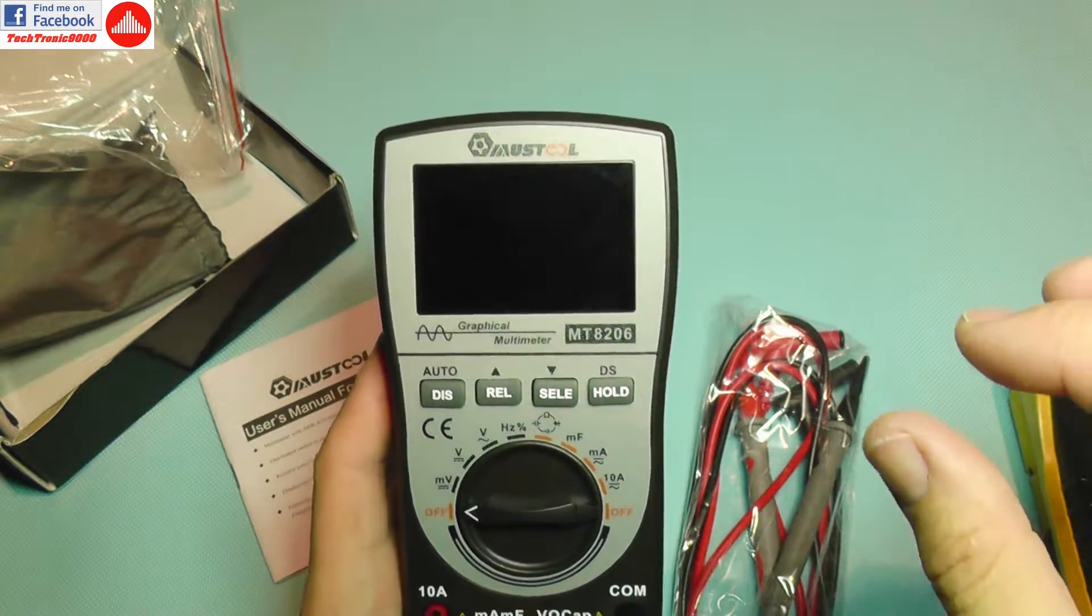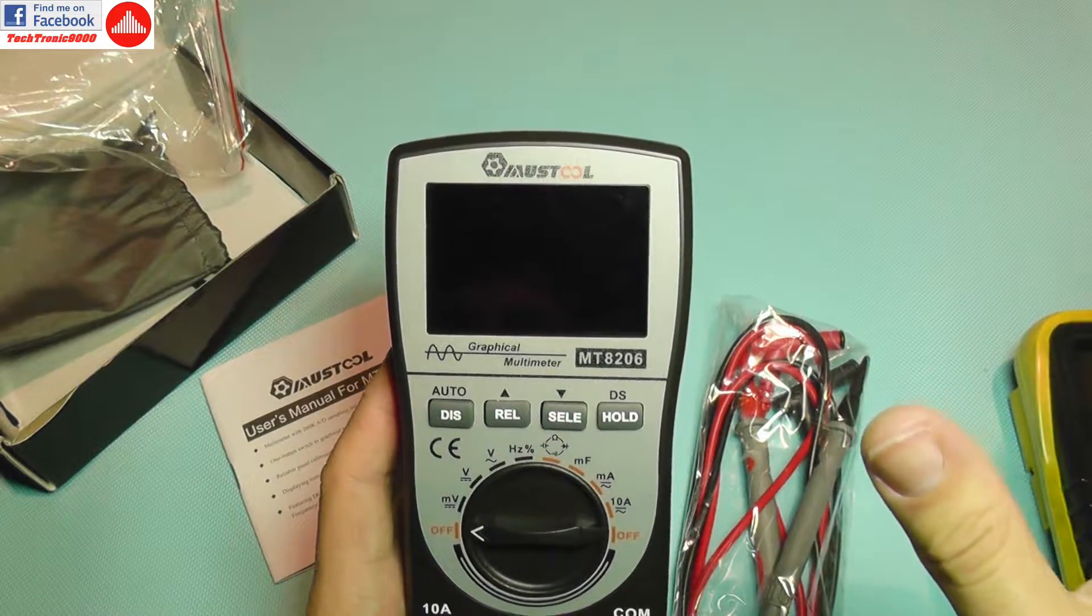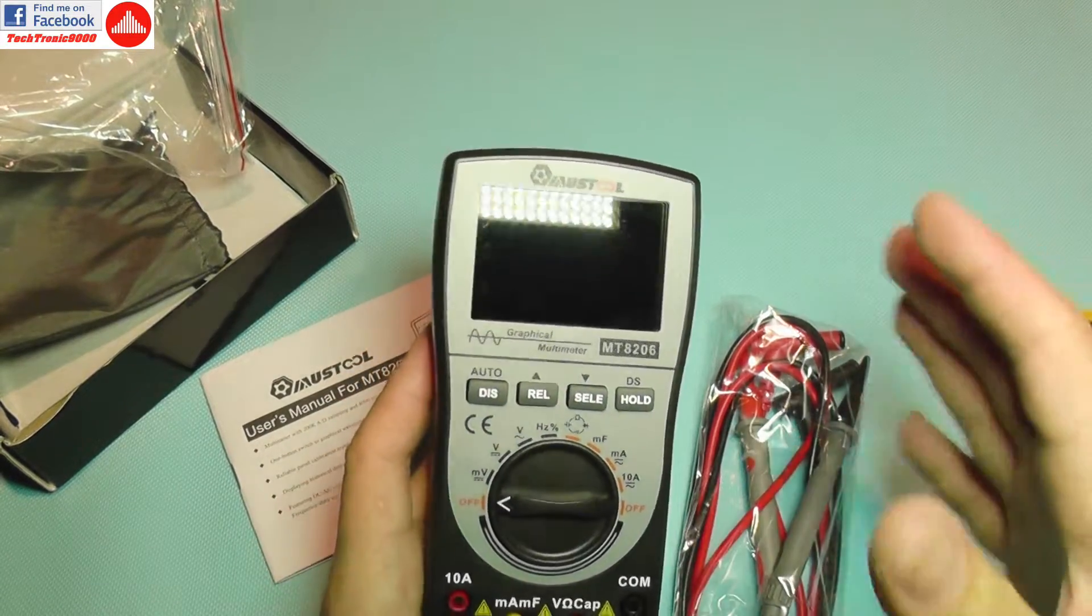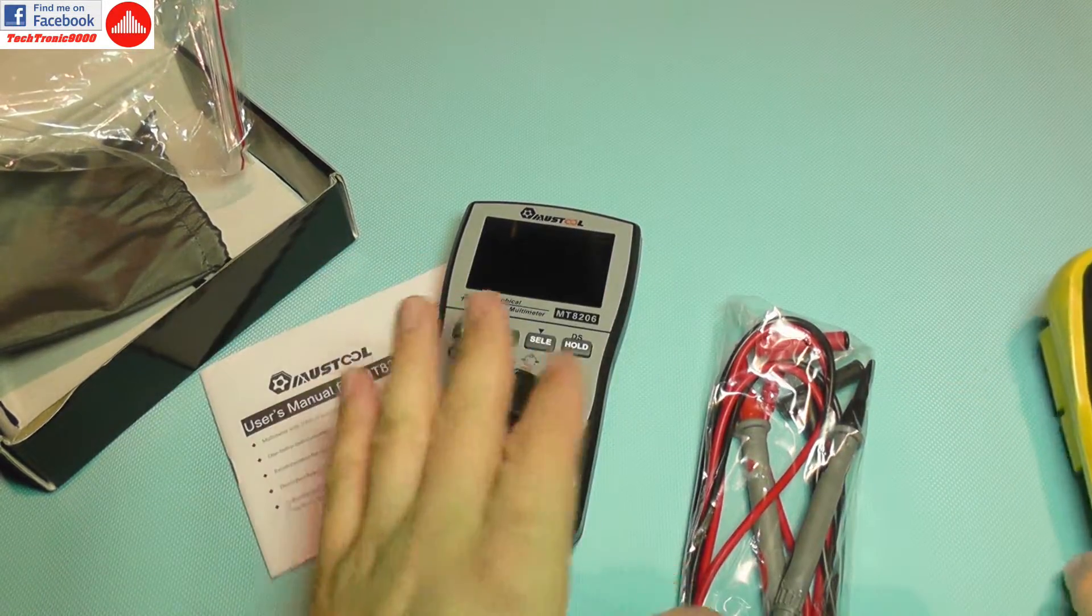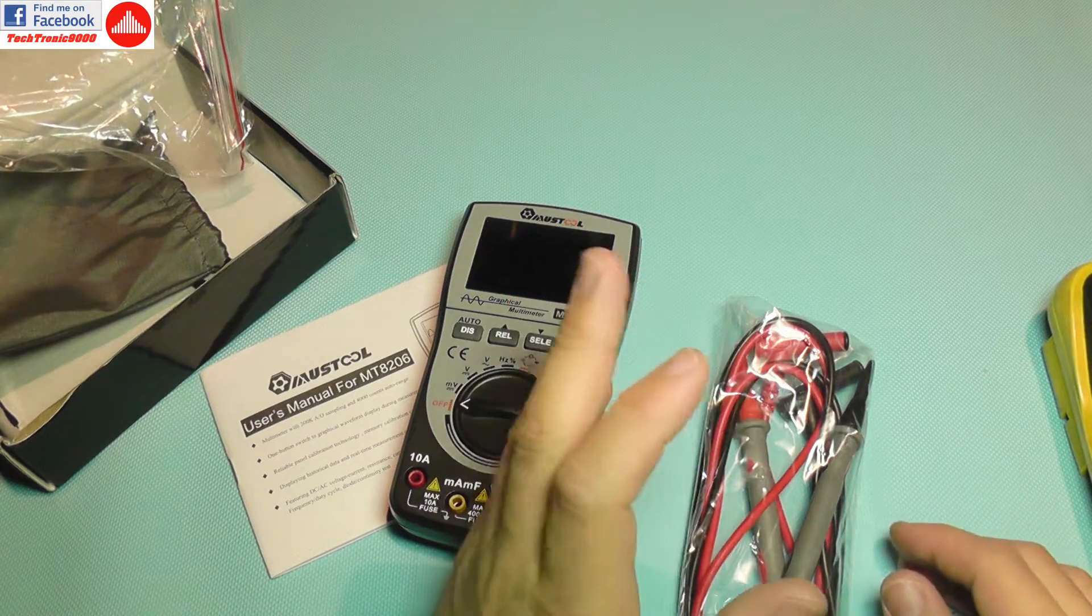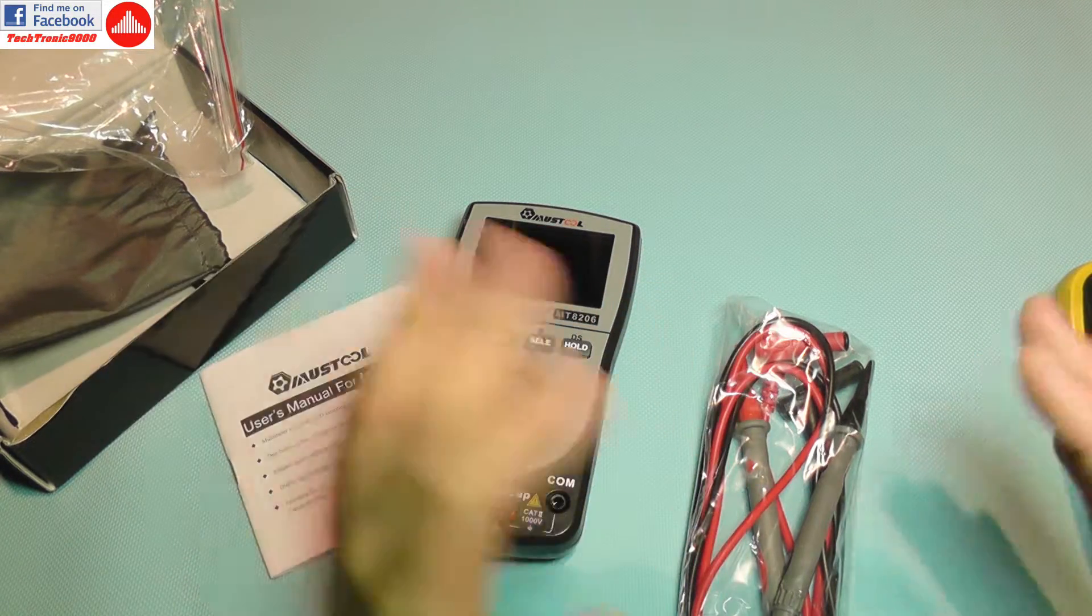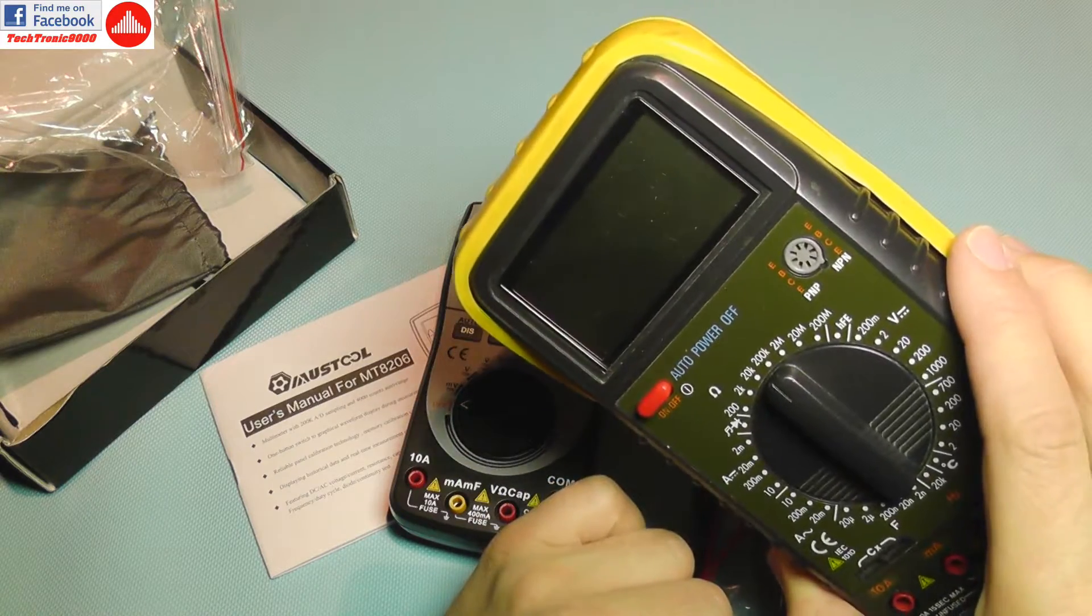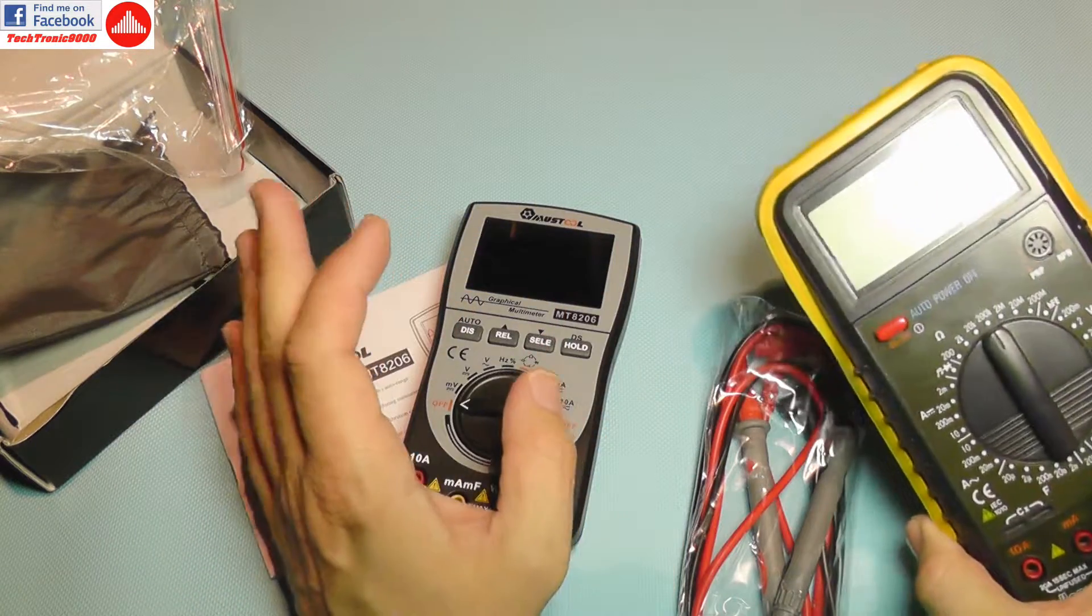Well, this thing only selects the measurement that you want to take, such as resistance, and it will scan and measure the exact resistance and display it on the screen. Very easy to use. Actually, this is easier to use for beginners, but some advanced users prefer the old type. I like both of them. This makes it easier for me to work.